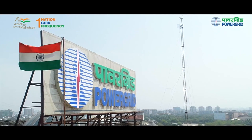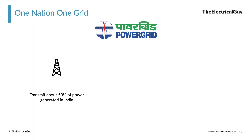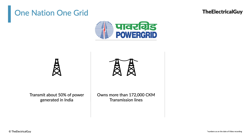Of course this was not an easy task. We are talking about connecting huge regions and transferring bulk amounts of power. This task was given to one of the biggest electrical power transmission companies — Power Grid. Power Grid transmits about 50% of the total power generated in India, owns more than 1,72,000 circuit-kilometers of transmission lines, and has more than 250 substations throughout the nation.